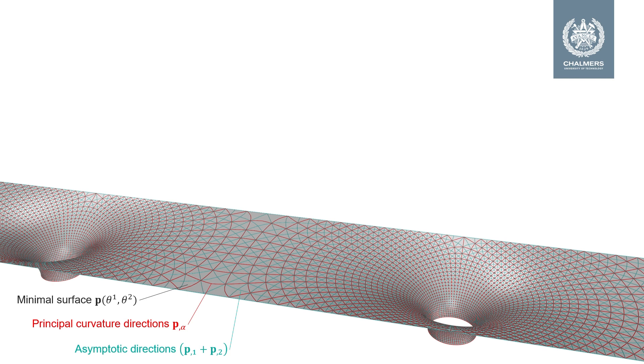If a cable net is constructed following principal curvature directions on a minimal surface with constant force density, the cable net will be in static equilibrium. This fact can be used in a very simple way to numerically form find the surface and the principal curvature net simultaneously. And this is what we have done to produce this image.